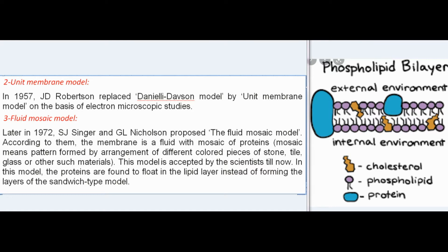Later in 1972, S.J. Singer and G.L. Nicholson proposed the fluid mosaic model. According to them, the membrane is a fluid with a mosaic of proteins — mosaic meaning a pattern formed by arrangement of different colored pieces of stone, tile, glass, or other such materials. This model is accepted by scientists till now.